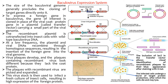The inclusion of lacZ in the transfer vector allows visual identification of recombinant plaques by their blue appearance after staining with X-gal. The viral plaques containing recombinant virus look different because they lack coat protein. The plaques with recombinant virus are picked and expanded.